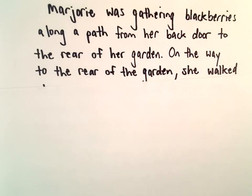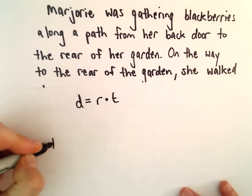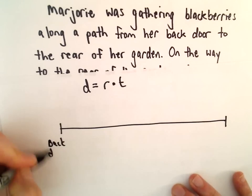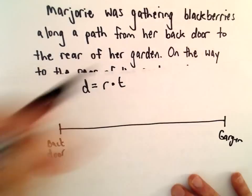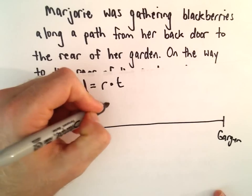Alright, so again, we're going to use distance equals rate times time. So let's think about it. Here's her back door of her house. There's the garden. Okay, so on the way out, there's some distance. We don't know what that is.